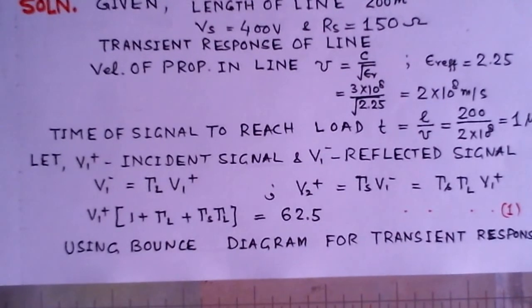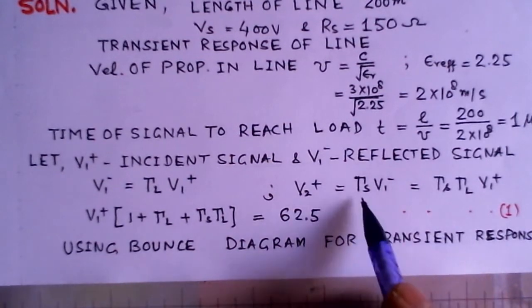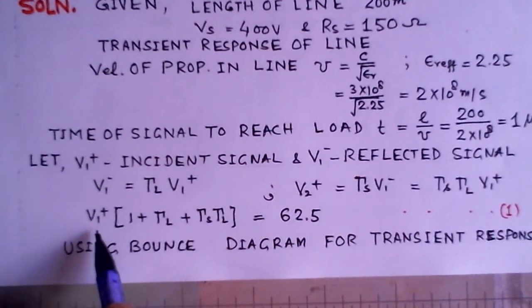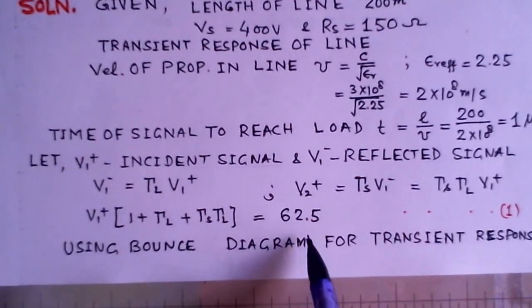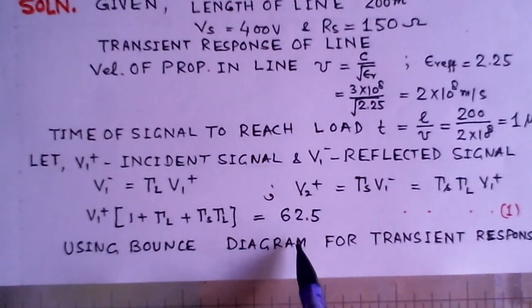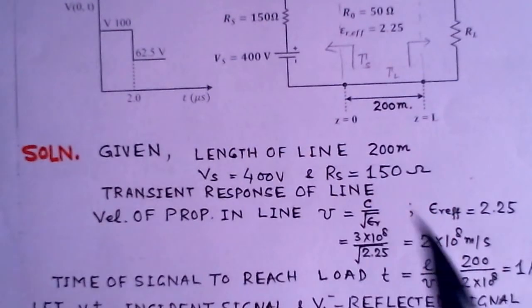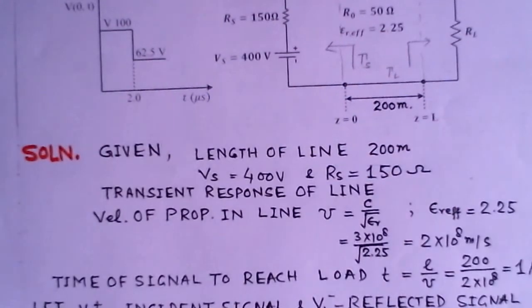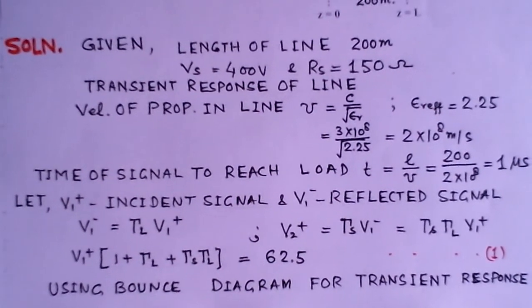So we find here, this V2 plus would be gamma S, V1 minus. And we substitute for V1 minus, this is gamma L, V1 plus. So the expression here for the voltage becomes V1 plus into 1 plus gamma L plus gamma S, gamma L. And this is equal to 62.5. How is 62.5? Because it is given from the transient analysis. You can notice here, after the signal has come back, after 2 microseconds and more, the voltage is 62.5 volts. So this is one equation which will be helpful.